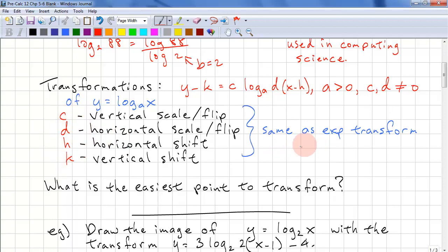These coefficients are the same as the ones for exponential transformation. We have c as vertical scale and flip, d as horizontal scale and flip, h is horizontal shift, and k is vertical shift.